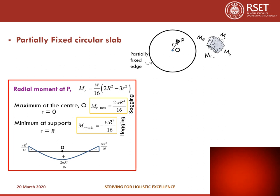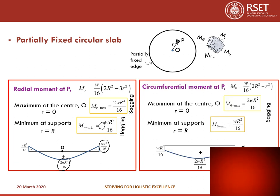For the partially fixed circular slab, a similar expression is derived. The maximum sagging moment at the center is 2wR²/16 and the maximum hogging moment at the support is wR²/16. For the circumferential bending moment M_theta, the expression is (w/16)(2R² - r²), with maximum 2wR²/16 at center and minimum 2wR²/16 at the support.